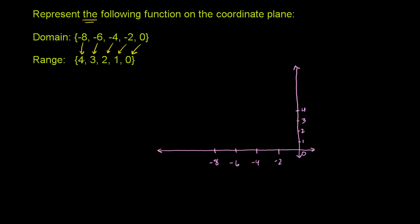If we assume the mapping that if you give this function negative 8, it maps to 4, then we can plot it here. So if we take this first pair, you give me negative 8, this function gives me 4. So negative 8, 4 is that point right there.